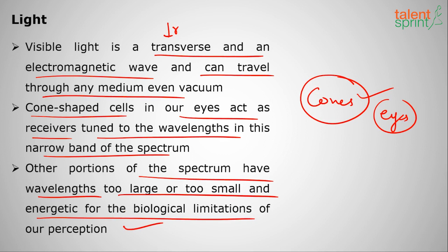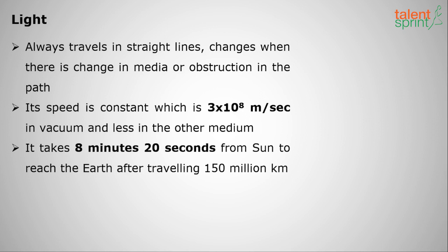Other wavelengths we cannot see — UV radiation, microwaves, radio waves, and infrared radiation — are insensitive to our cones. Only visible light can be seen through the cones of our eyes.